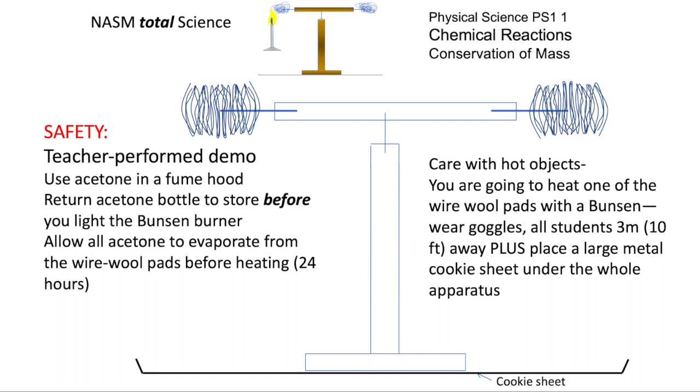And the safety precautions: you're going to wash the wool in acetone and return the bottle to the store before you light a Bunsen burner. But you've also got to do the washing of the wire wool pads 24 hours before you do the experiment and allow that acetone to evaporate. Remember, if we're heating the equipment, it's going to get hot, and students should stay 3 meters away, 10 feet away, and put a cookie sheet under the whole apparatus.